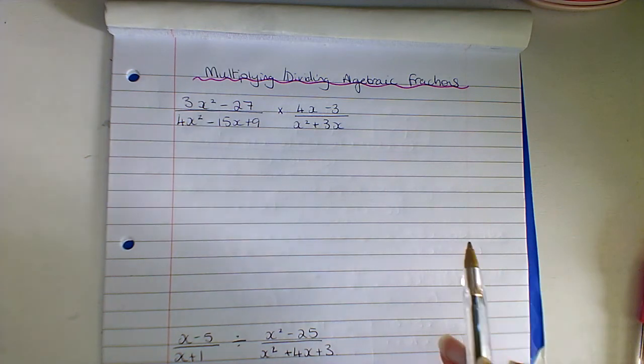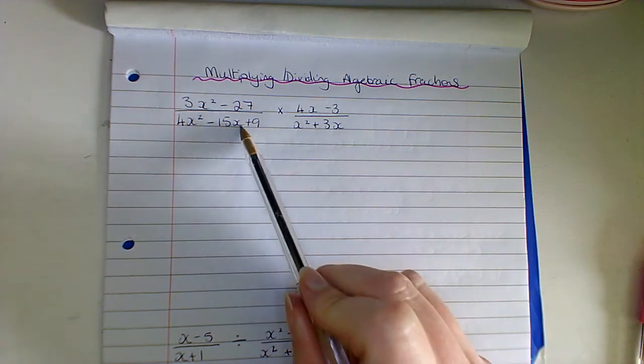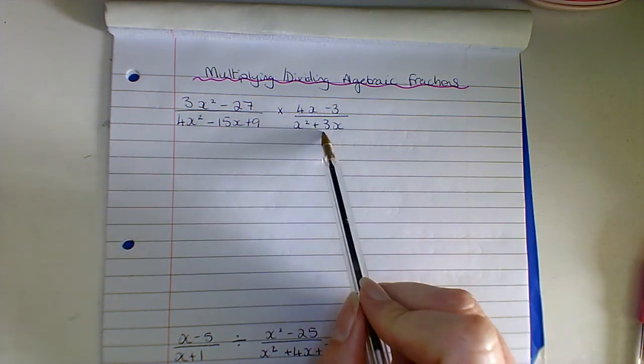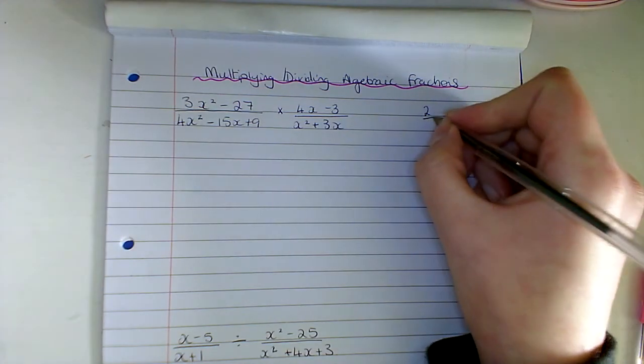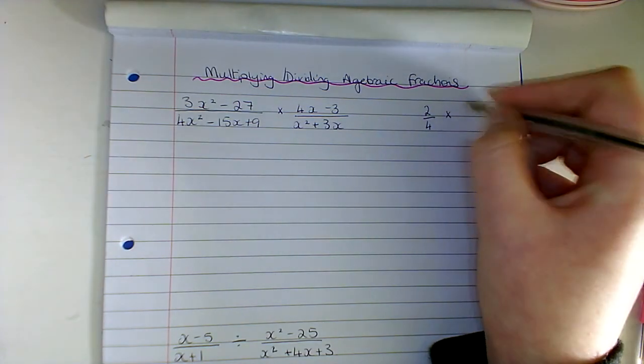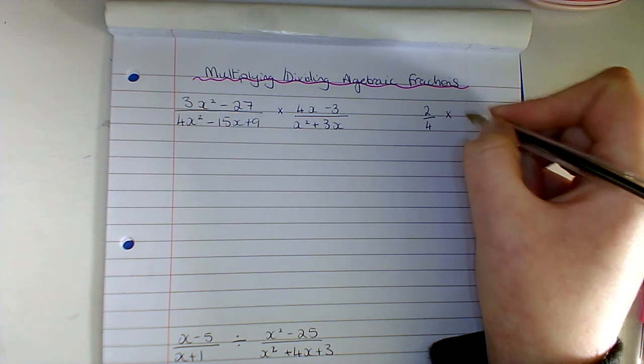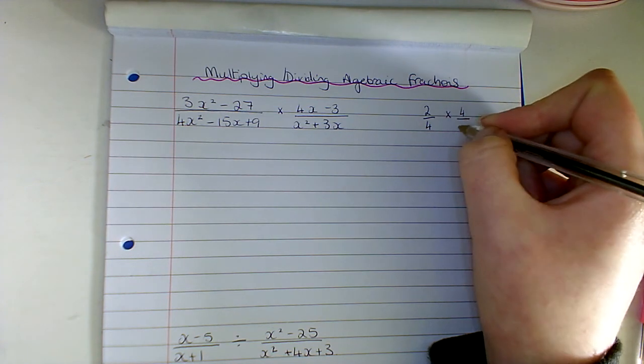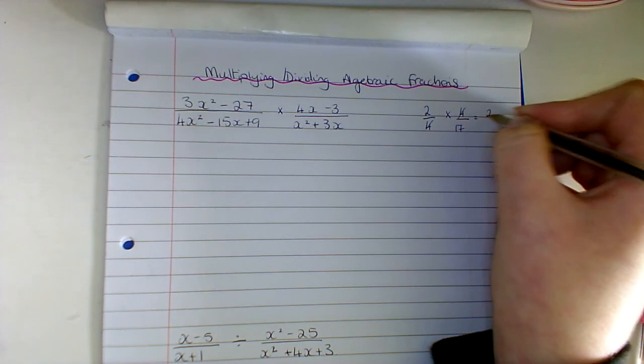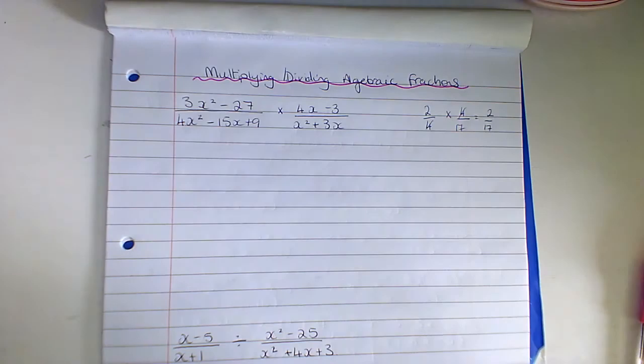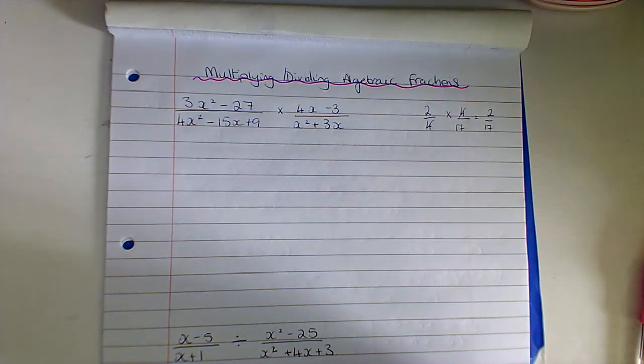So that's the key here. If I was to say to you 2 over 4 multiplied by, let's say, 4 over 17, the 4 and the 4 would cancel and I would get 2 over 17 as my answer. We're going to follow that same process here.